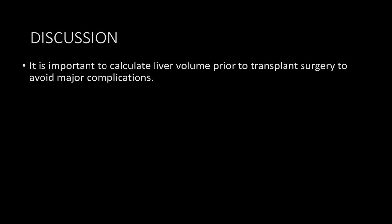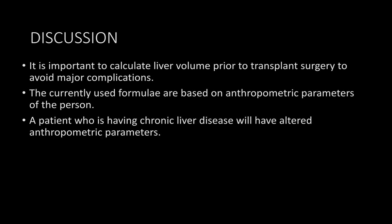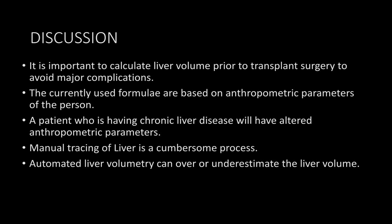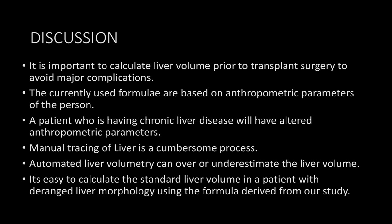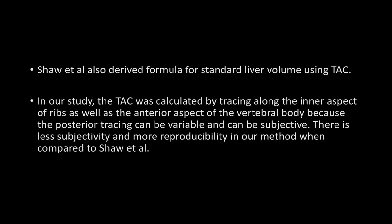It is important to calculate liver volume prior to transplant surgery to avoid major post-procedural complications like small liver volume syndrome. Currently used formulas are mainly based on anthropometric parameters; a patient with chronic liver disease will have altered anthropometric parameters, and manual tracing of the liver is cumbersome in a recipient. Automated liver volumetry can also overestimate or underestimate volume. Previously used formulas are largely anthropometric-based, except Shaw et al., who used thoracoabdominal circumference but without standardization. In our study, we standardized the thoracoabdominal circumference.